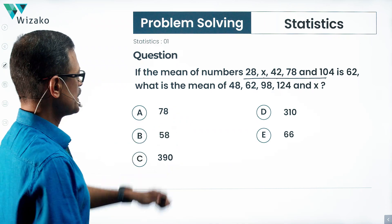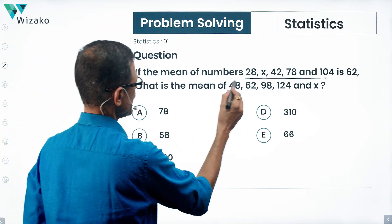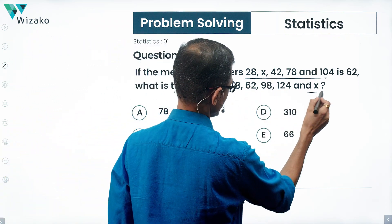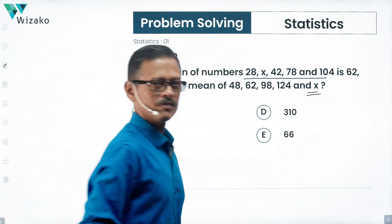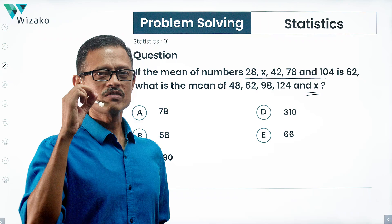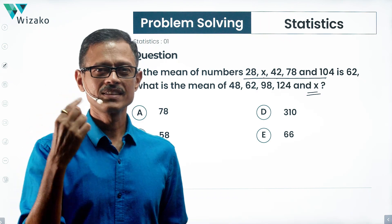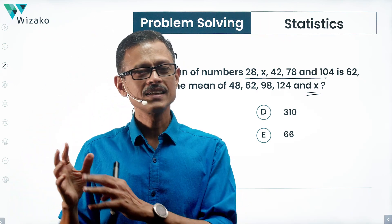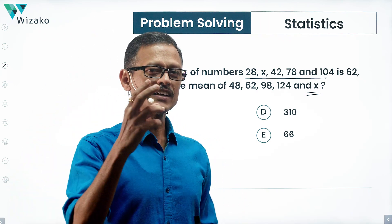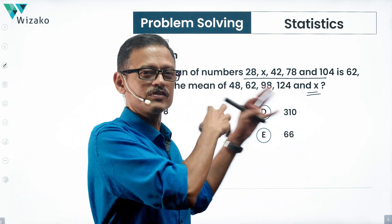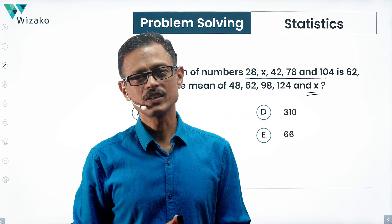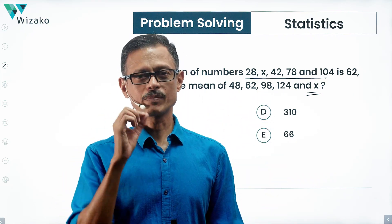What is the mean of 48, 62, 98, 124, and x? We should be able to solve this question in two ways. The second method we'll look at subsequently works only when we have a question of this kind. We'll look at what this kind particularly is when we look at that method.